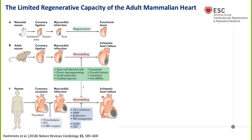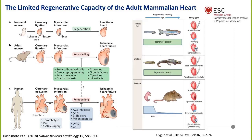Interestingly, in mice the response to myocardial infarction differs between developmental stages. Neonatal mice less than one week old are capable of regenerating their heart with almost complete functional recovery after injury. However, this regenerative capacity is lost by postnatal day seven, after which the default response is fibrosis and heart failure. There is great optimism based on the hope that we might learn from model systems such as fish and urodeles that retain regenerative capacity throughout life.